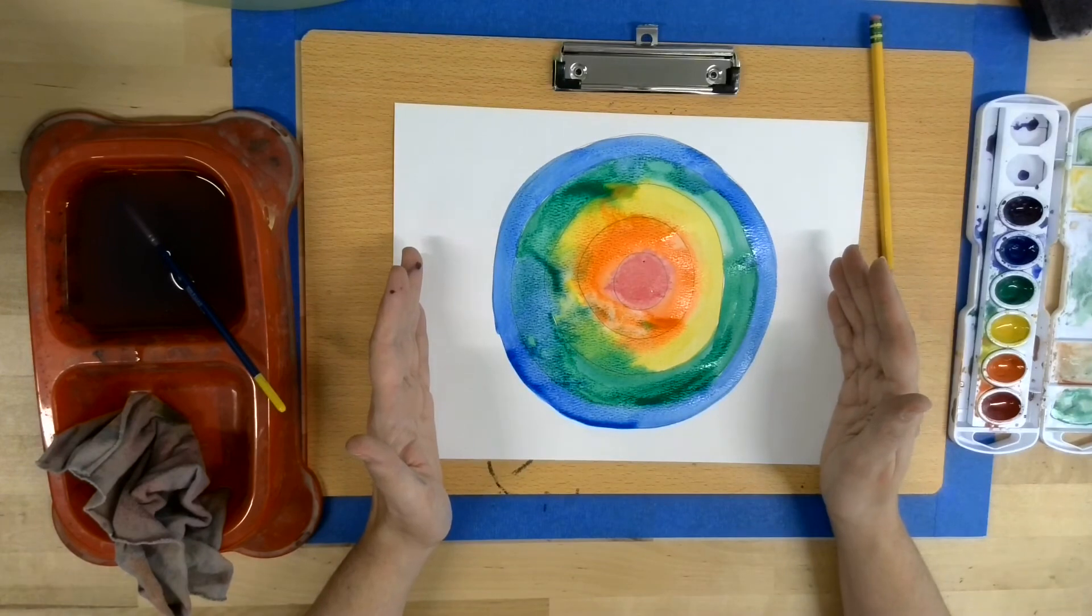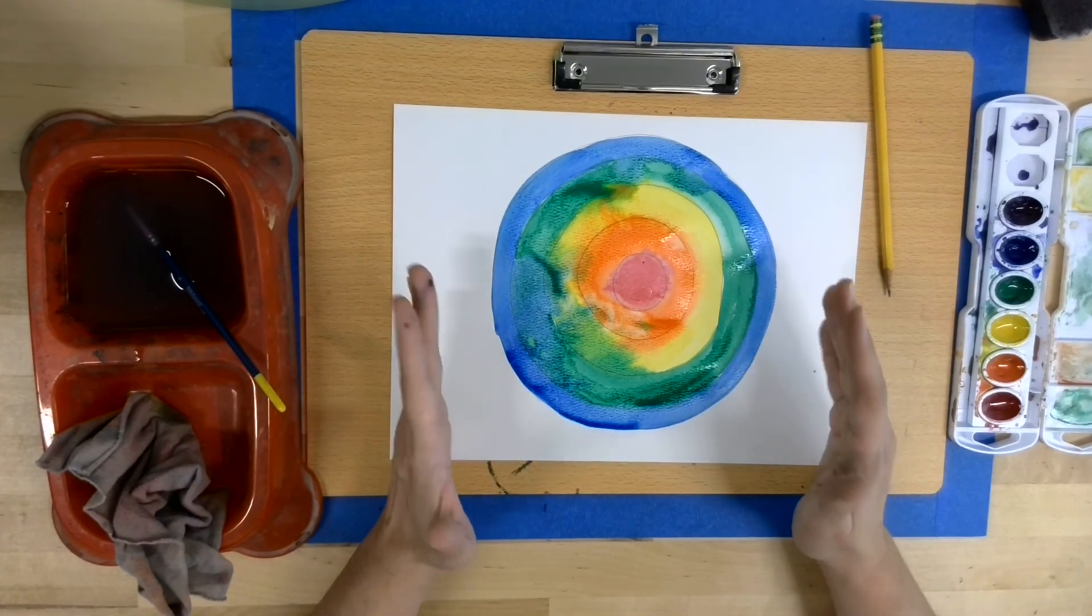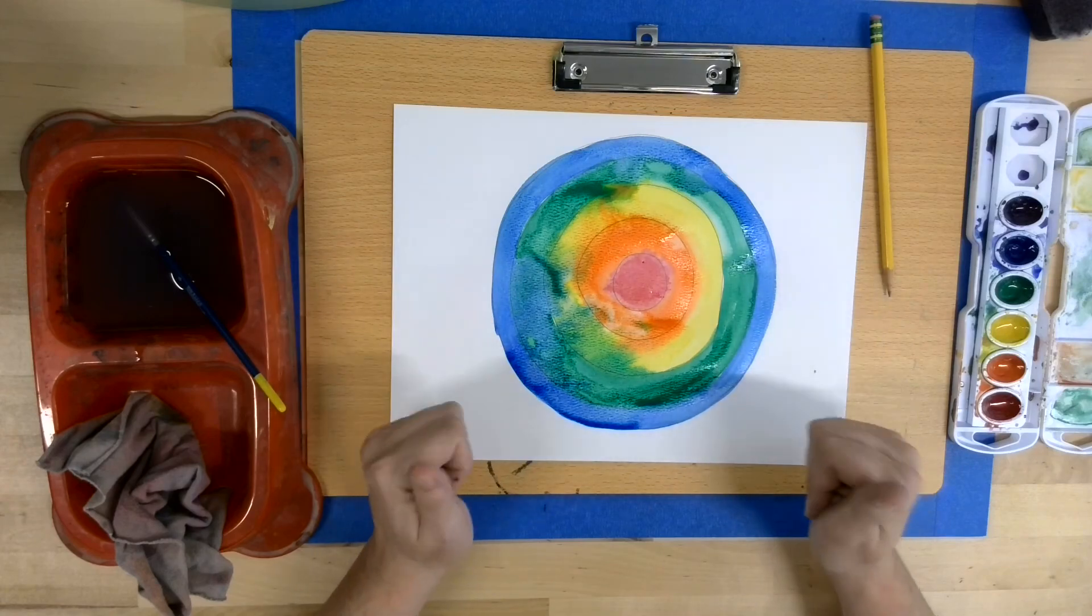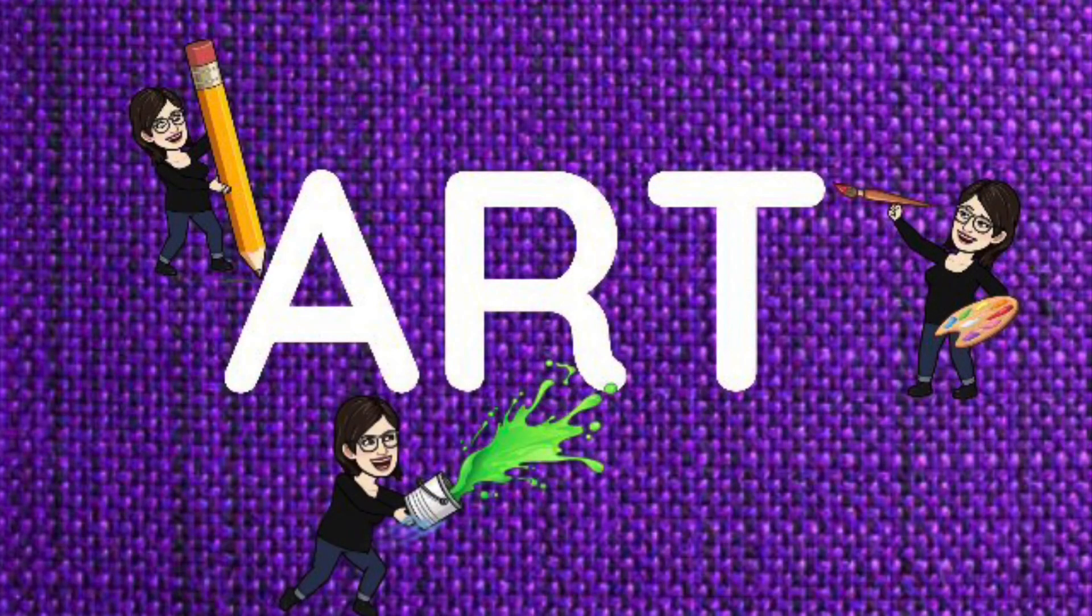This is my finished piece. The next step would be to let it dry and then cut on the outline of the circle. Don't forget to submit your work for credit. Have a good day!